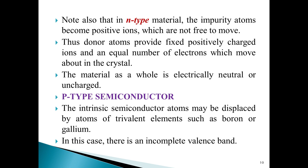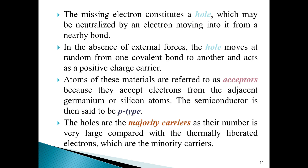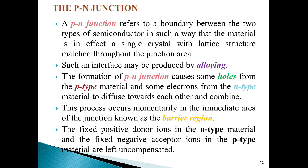P-type semiconductor: the intrinsic semiconductor atoms may be displaced by atoms of trivalent elements such as boron or gallium. In this case, there is an incomplete valency band. The missing electron constitutes a hole which may be neutralized by an electron moving into it from a nearby bond. In the absence of external forces, the hole moves at random from one covalent bond to another and acts as a positive charge carrier. Atoms of these materials are referred to as acceptors because they accept electrons from the adjacent germanium or silicon atoms. The semiconductor is then said to be p-type. The holes are the majority carriers as their number is very large compared with the thermally liberated electrons, which are the minority carriers.